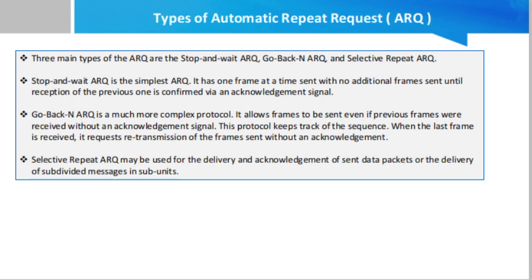Go-Back-N ARQ is a much more complex protocol. It allows frames to be sent even if previous frames were received without an acknowledgement signal. This protocol keeps track of the sequence; when the last frame is received, it requests retransmission of the frames sent without an acknowledgement. This is repeated until all frames are received with an acknowledgement signal. However, this protocol may result in many frames being sent multiple times, which can be avoided by using Selective Repeat ARQ.